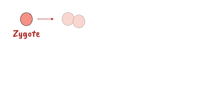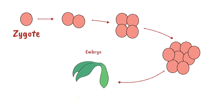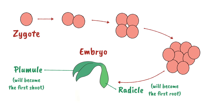The single zygote cell divides and develops to become a plant embryo, which has a plumule and a radicle. The plumule will go on to become the first shoot of the plant, while the radicle will become the first root.